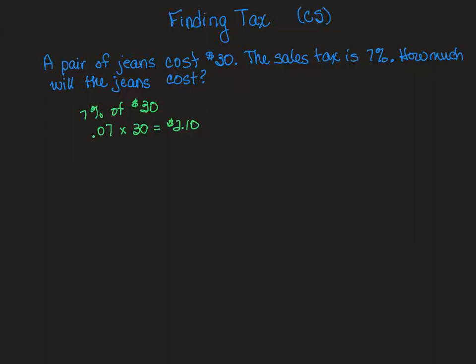So we know that that's $2.10. So I know that sales tax is added on. So then I would take that. This is the tax. And so I am going to take that $30 and I'm going to add on the $2.10. And when I get to the cash register, I'm going to have to pay $32.10.